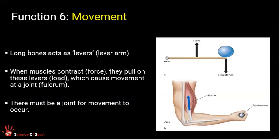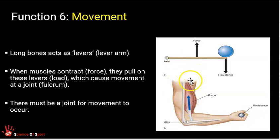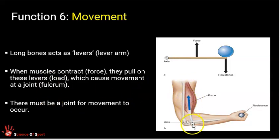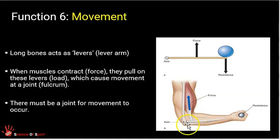The last function of the skeletal system — particularly relevant for sports — is movement. Our long bones act as levers: two rigid bones pivot around an axis or fulcrum. This lever system enables movement at the knee, arm, shoulder, and other joints. When the biceps brachii contracts, it pulls on its connection on the lever on the other side of the joint, enabling flexion of the elbow. You need two bones to create a joint and generate movement around the fulcrum.